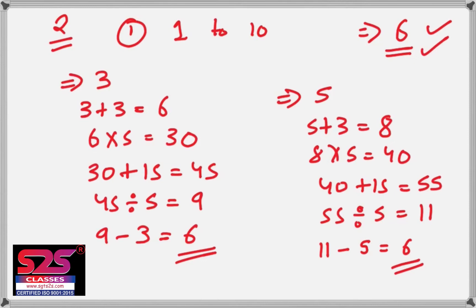So basically, in this trick, after following the steps I've told you, if a person chooses any number between 1 to 10, the final answer will always be 6 — but this is a trick only you know. Tell a person to choose any number, ask them to follow the steps, then reveal the number they're thinking of. I'll attach the steps at the end of the video so you can do the trick properly.